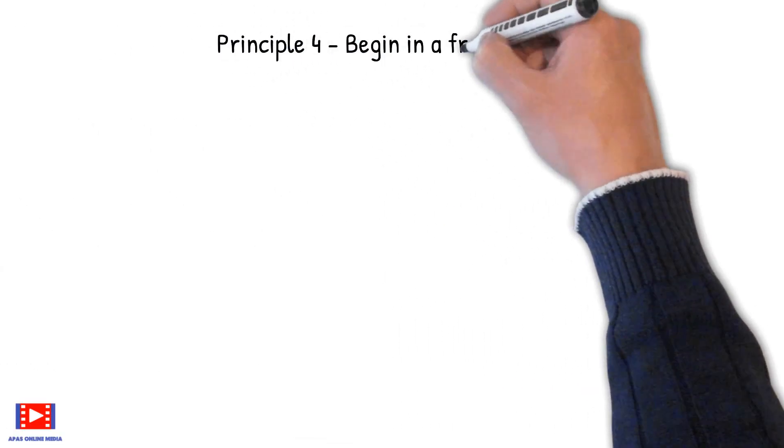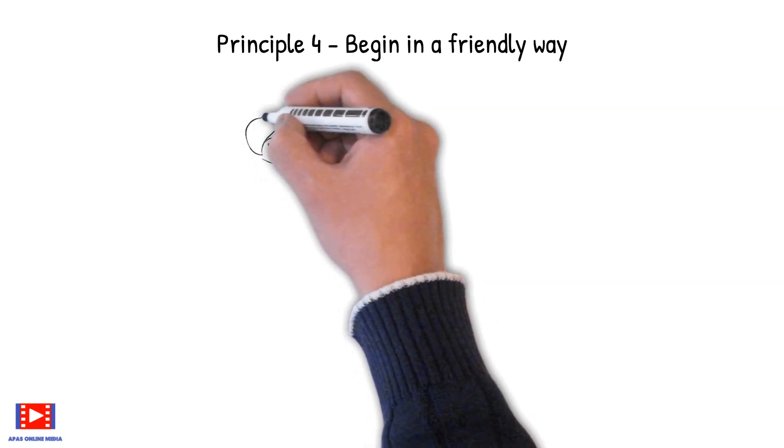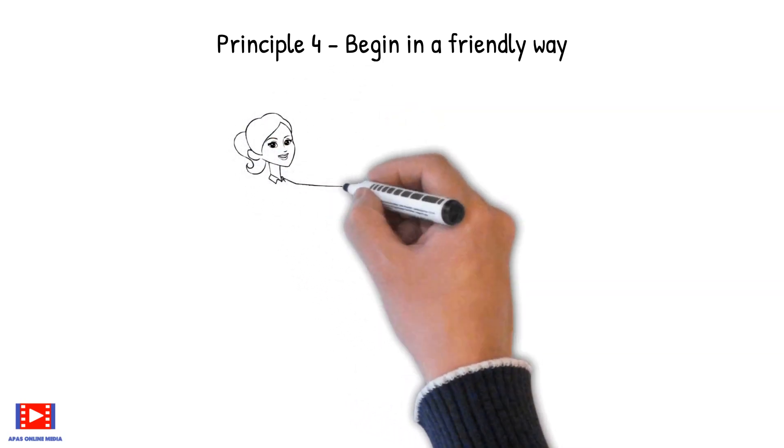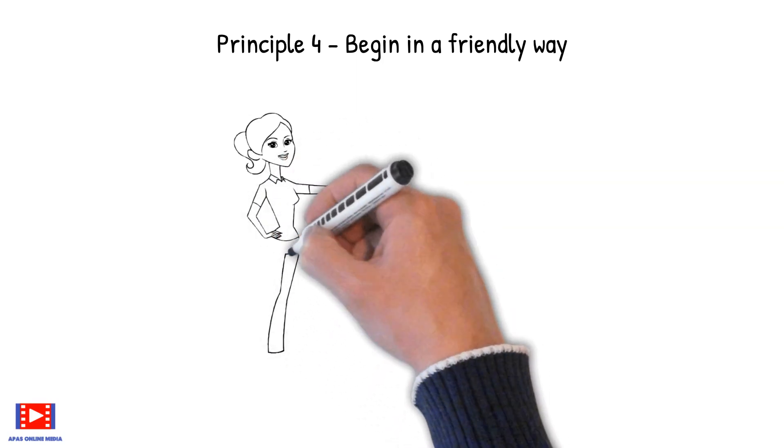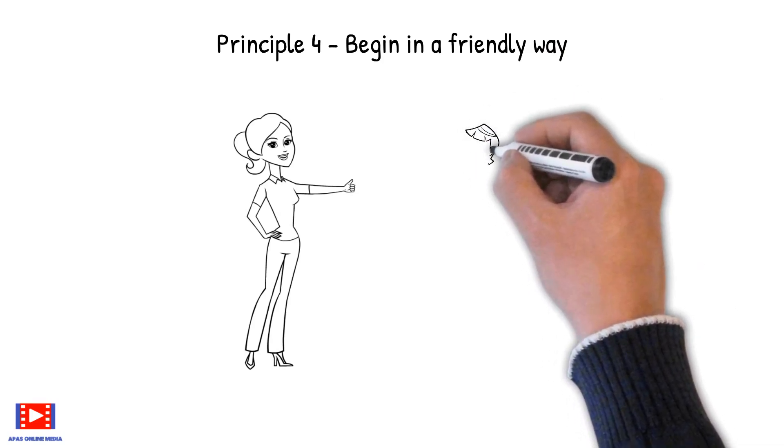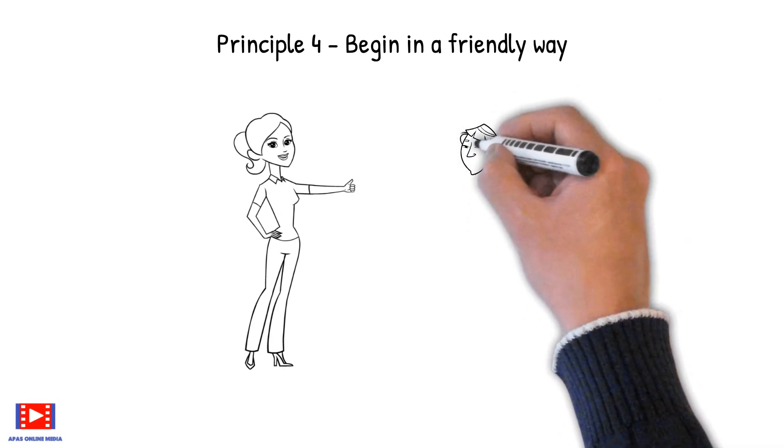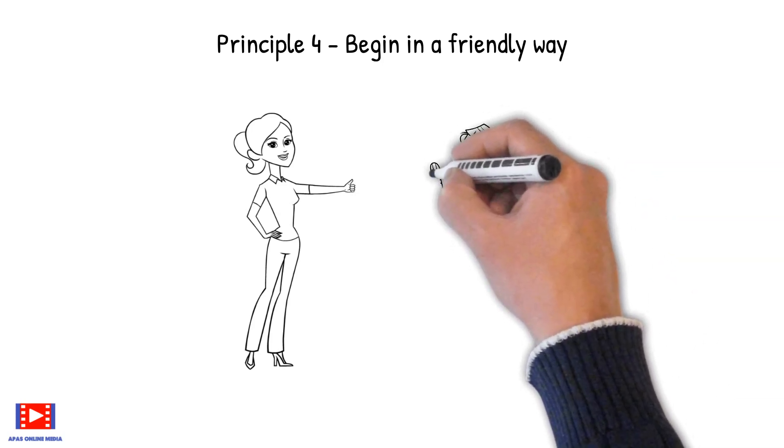Principle 4: Begin in a friendly way. The use of gentleness and friendliness is demonstrated day after day by people who have learned that a drop of honey catches more flies than a gallon of gall. Therefore, it's imperative that we always begin in a friendly way.